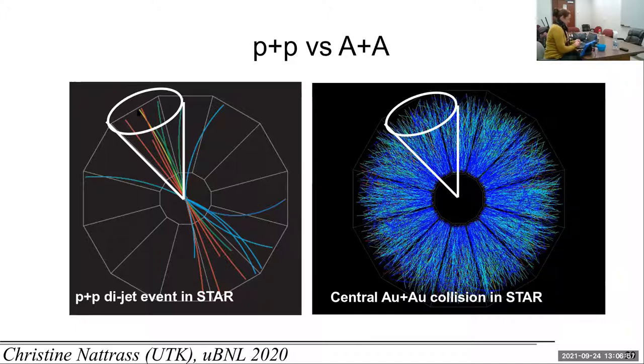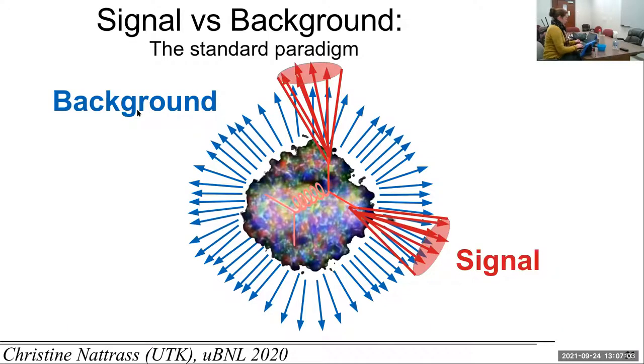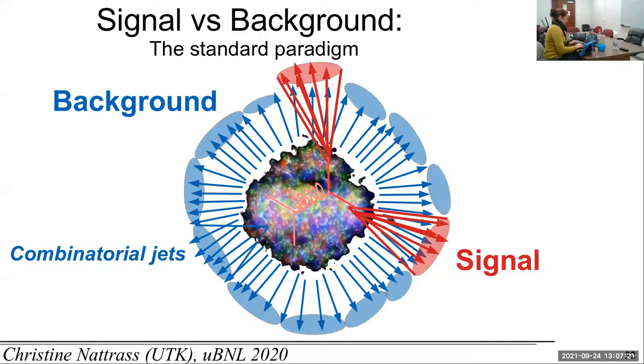The standard paradigm is that we have an inherent assumption that there is background and that there is signal and that the two are separated and clearly defined. You have these jets that are combinatorial jets. We use this phrase. What we mean by that is that they're random particles so that the particles the jet finder clusters into a jet have nothing to do with each other.